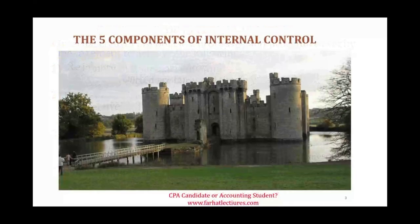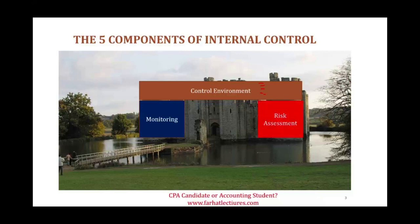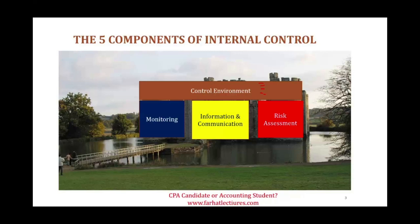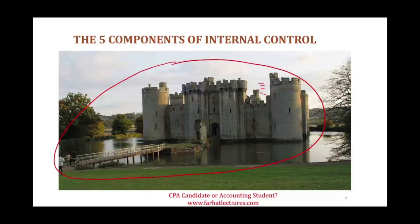There are five components of internal control that make up this fort. The first is the control environment — we'll have a whole session on its various sub-components. The second is monitoring. The third is risk assessment — is the company properly assessing its risks? The fourth is information and communication — a proper communication infrastructure, with accounting information systems and communication flowing smoothly upward, downward, and throughout the company. The fifth is control activities.